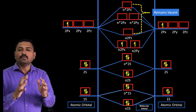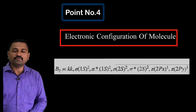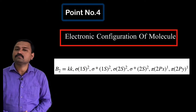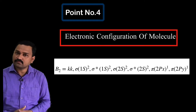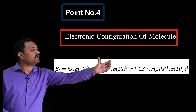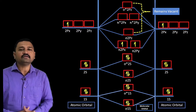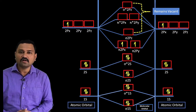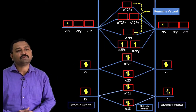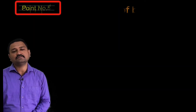This leads to the formation of the boron molecule. Step number four is the electronic configuration. The electronic configuration for the boron molecule is: KK σ1s² σ*1s² σ2s² σ*2s² π2px¹ π2py¹. This electronic configuration is written by referring to point number three, where we distributed the 10 electrons.